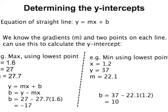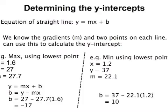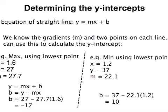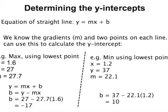Since we know the gradients of the two lines, as well as two points on each line, we can use that to figure out the y-intercept. We really only need one of the two points, so we're going to use the lowest point on each line.